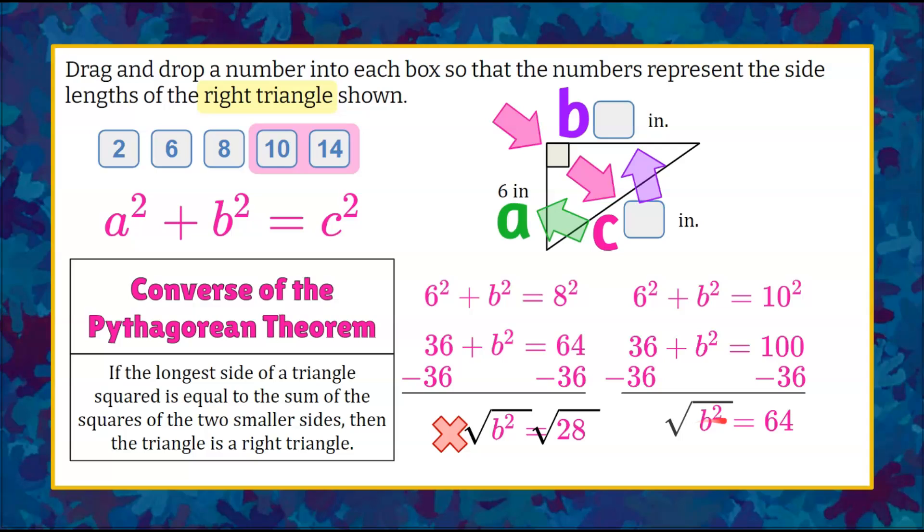To solve for B, we're going to do the square root of both sides. The square root of B squared is B, and the square root of 64 is 8.